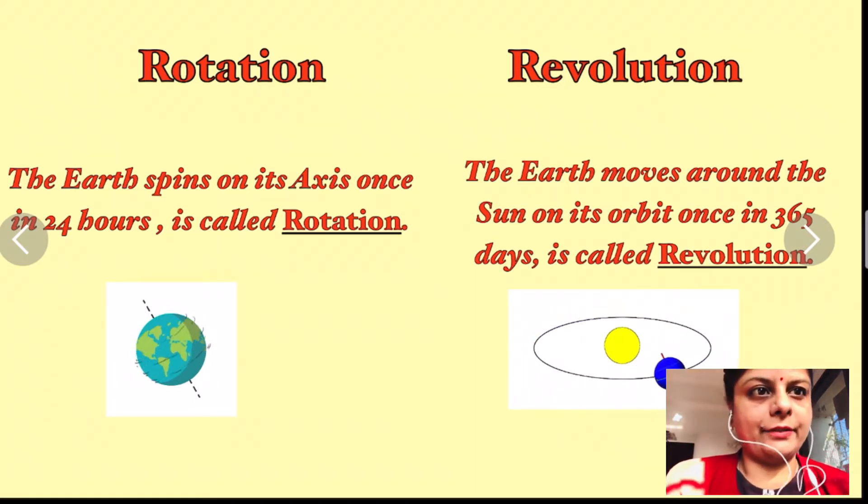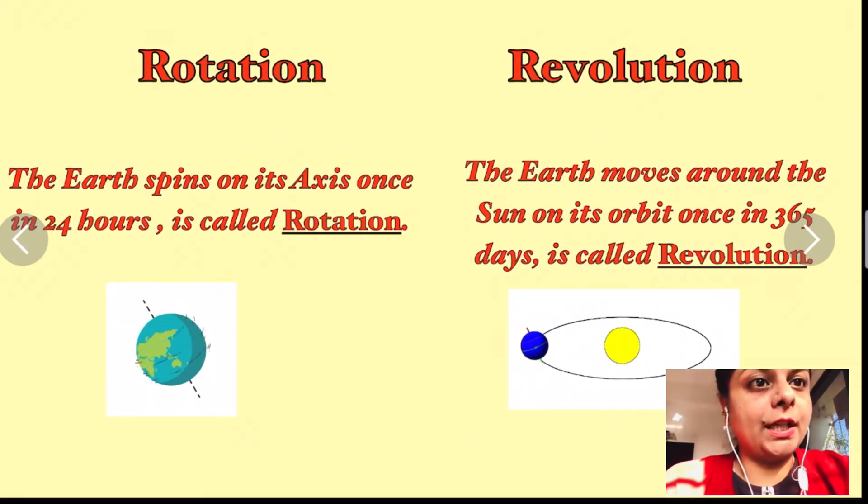Rotation is getting over in 24 hours, which is making one day, and revolution is getting over in 365 days, which is called a year. So rotation is daily motion and revolution is annual motion.